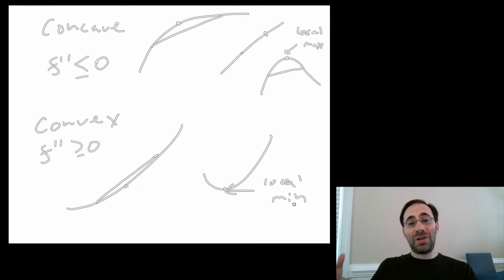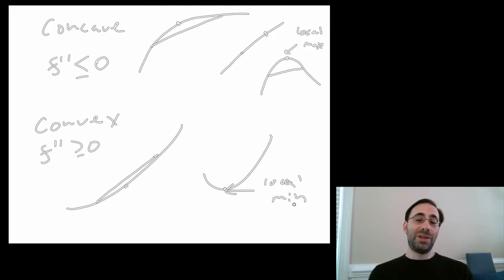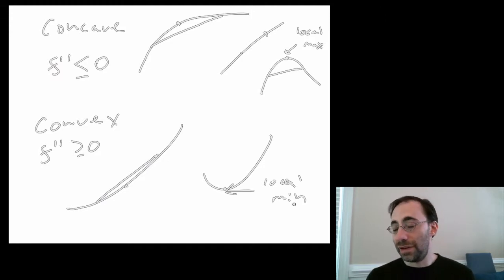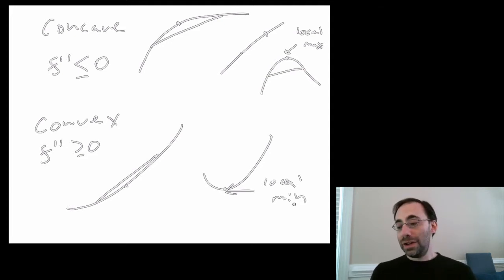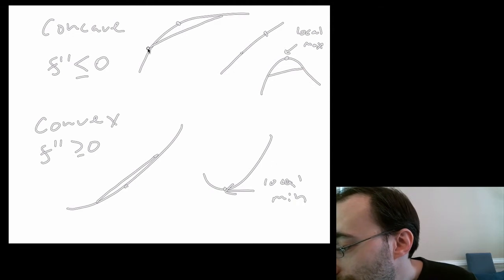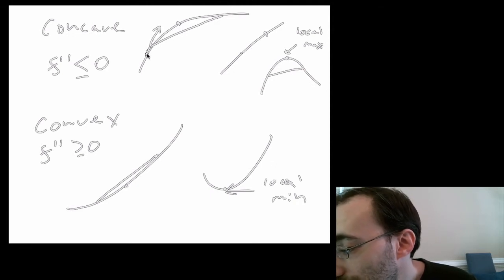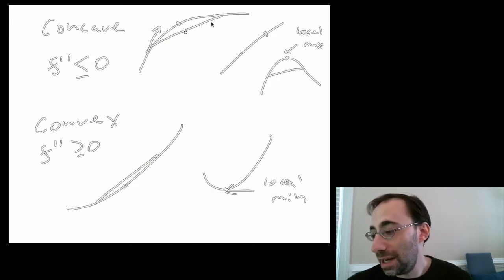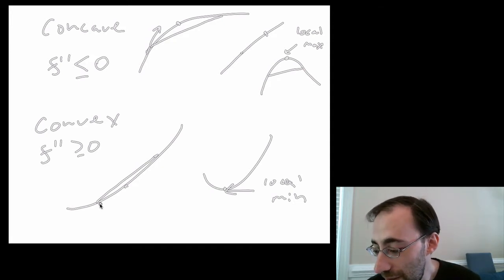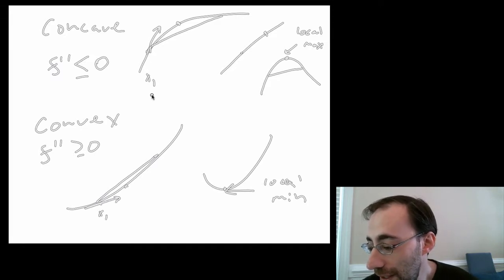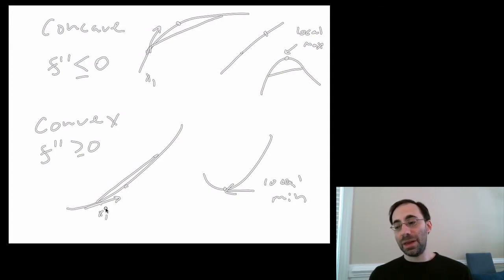We'll use it for the exact same purposes here. All we do is transfer the definitions to equivalent ones for the case of a multivariable function — a function of more than one variable. One thing to note before using algebra: if you look at the derivative of the function at a point on a concave curve, it's more steeply sloped than the secant between two points. On a convex curve, the derivative at the first point is less steeply sloped than the secant.